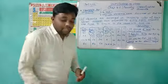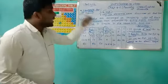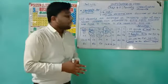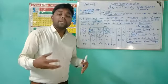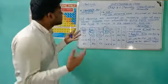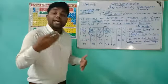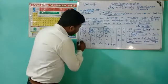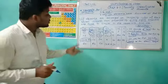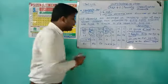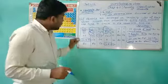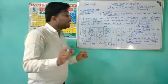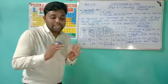The next disadvantage is that Newlands said only 56 elements exist in nature, but we know that later on, many more elements were discovered. So this is another disadvantage. One more disadvantage is that he placed copper and nickel in the same slot without giving any clarification or explanation for this placement.